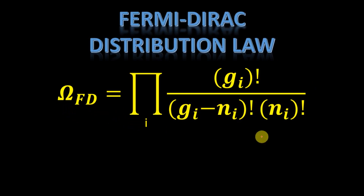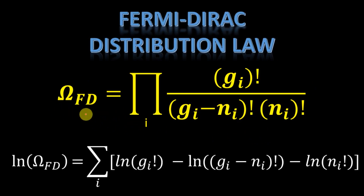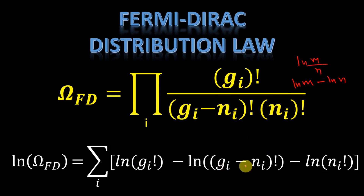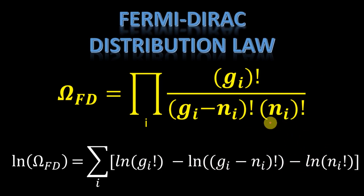Let's take the logarithm first. So log of Omega_FD equals — since the expression is a product, taking the logarithm converts it to a sum. So this becomes a summation: log of G_i factorial, and since log(M/N) = log(M) - log(N), we get log of (G_i - N_i) factorial, minus log of N_i factorial.